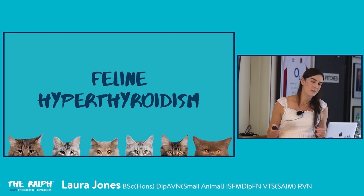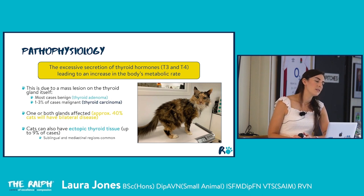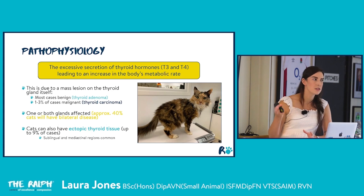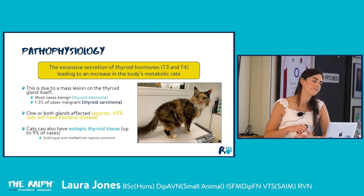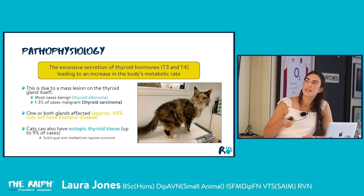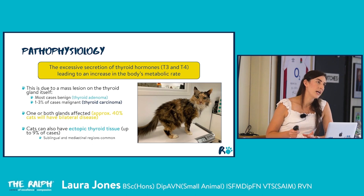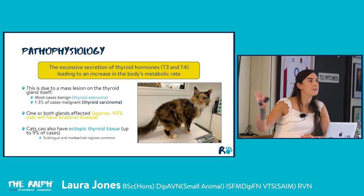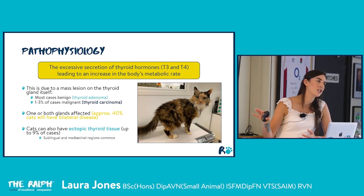Feline hyperthyroidism is defined as excessive secretion of thyroid hormones causing an increase in metabolic rate, due to one or more mass lesions within the thyroid. Most cases are benign adenomas, though up to 3% are carcinomas. Around 40% of cats have both thyroid glands affected. Importantly, ectopic thyroid tissue can exist in other locations such as the mediastinum — meaning a bilateral thyroidectomy might not resolve hyperthyroidism if ectopic tissue remains.